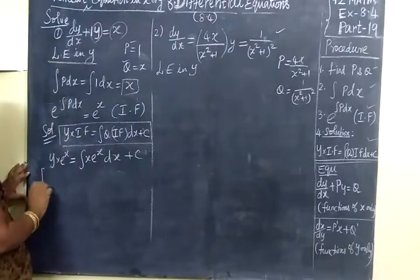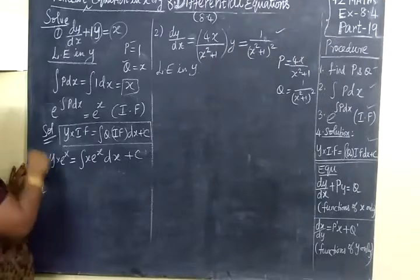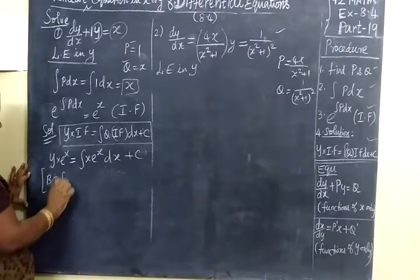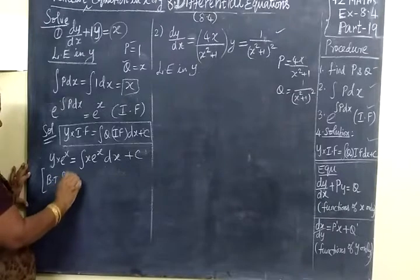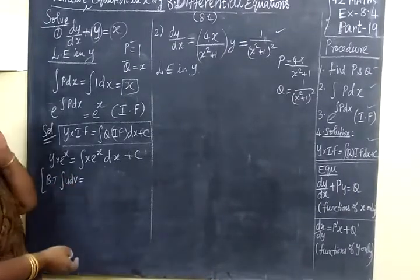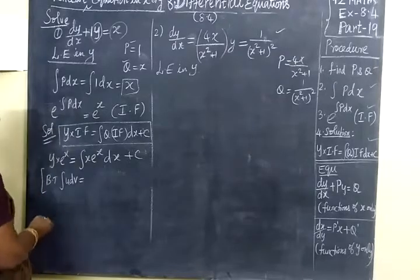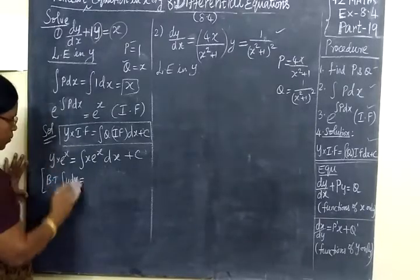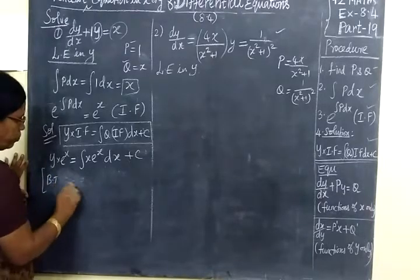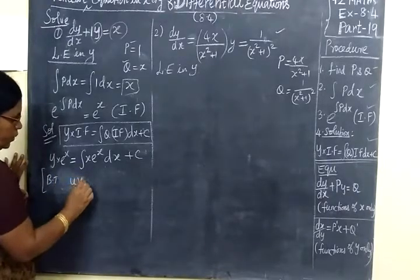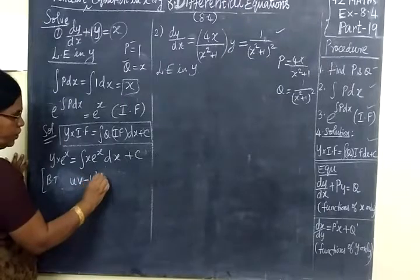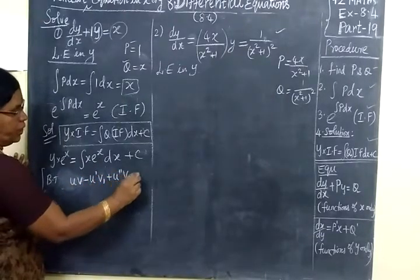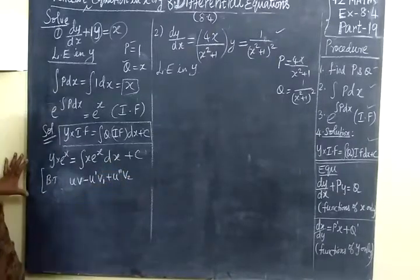Now we apply the integration by parts theorem. By the Bernoulli theorem, integral of U dV equals UV minus integral V dU. For easier computation, we use the formula: UV minus U' V1 plus U'' V2 and so on, with alternating plus and minus signs.